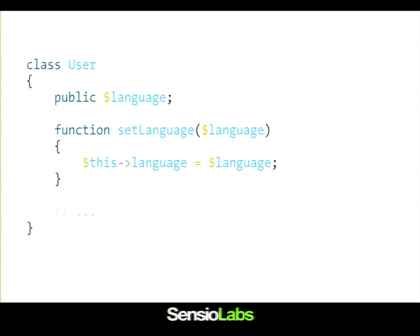When I'm talking about dependency injection, I'm talking about object-oriented programming. So if you're not using objects, you can't really talk about dependency injection. We have this user object with a language property, and we have a setLanguage method to be able to set the user language. We probably also have a getter and a bunch of other methods, but that's not really interesting for what we're talking about.